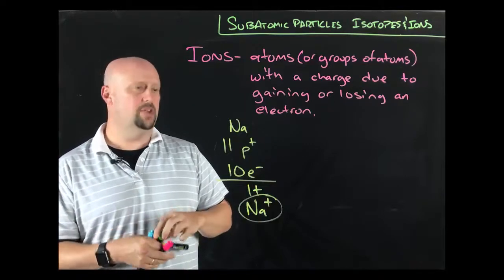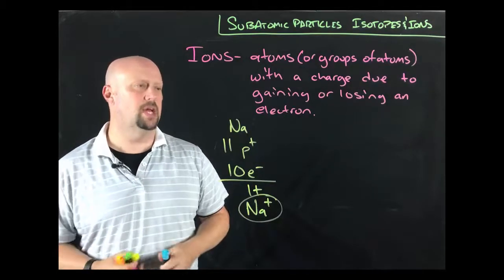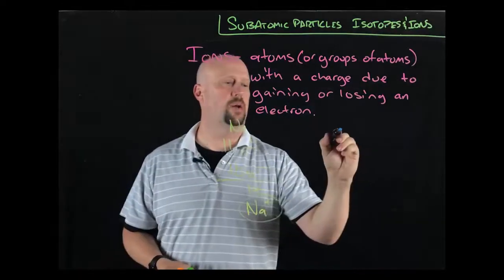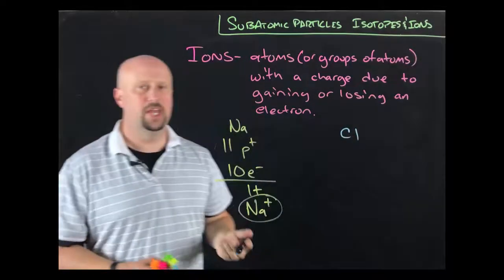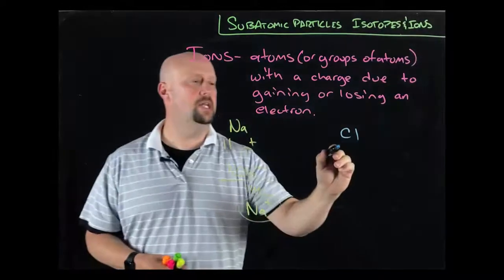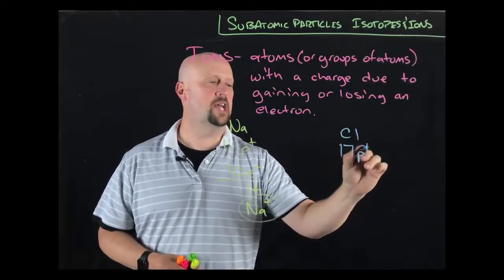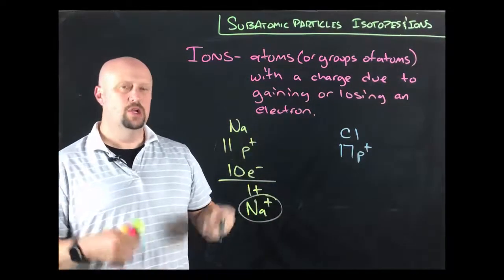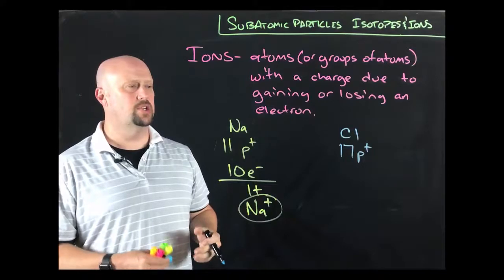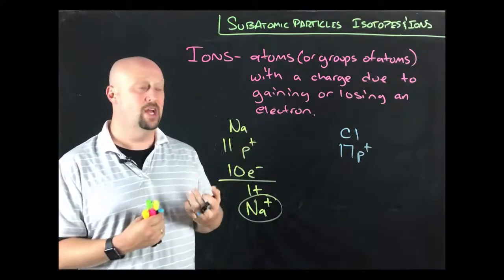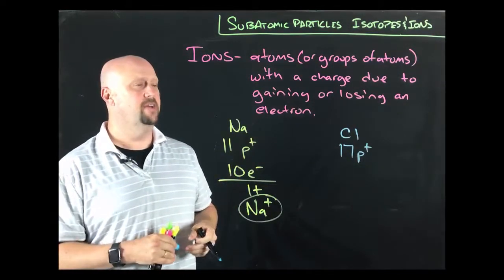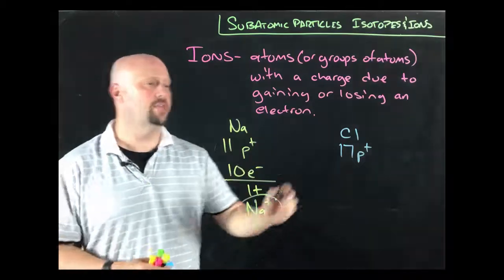How would that work in another direction? Well, if we took something like, say, the chlorine that we were working on before, we saw that that chlorine had 17 protons. It's got an atomic number of 17. Normally, it would have 17 electrons also, but very often that chlorine, chlorine is pretty electronegative. And so it's going to gain an electron.